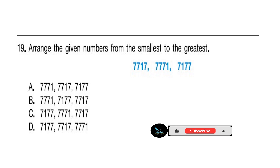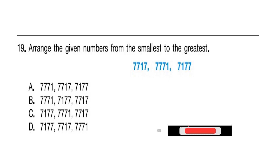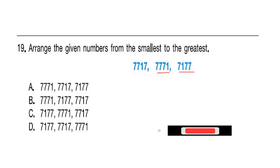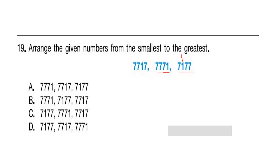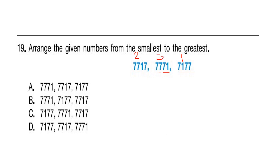Question number 19. Arrange the given numbers from the smallest to the greatest. The numbers given are 7,717, 7,771, and 7,177. The smallest number is 7,177, second is 7,717, and third is 7,771. The correct answer is Option D.